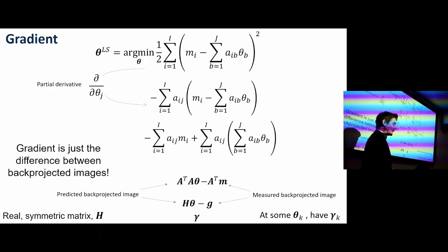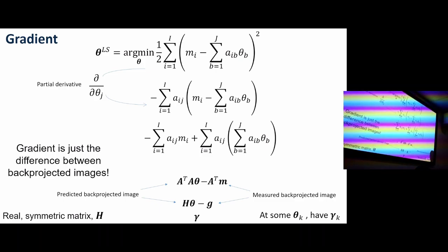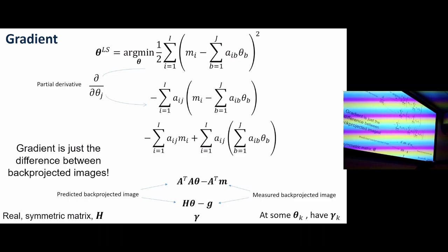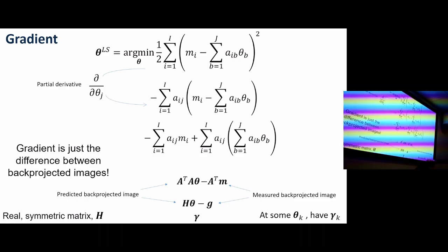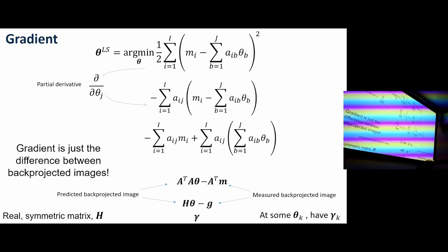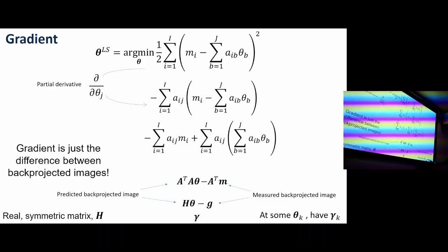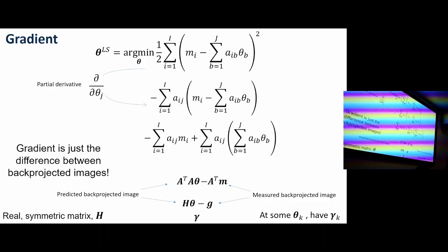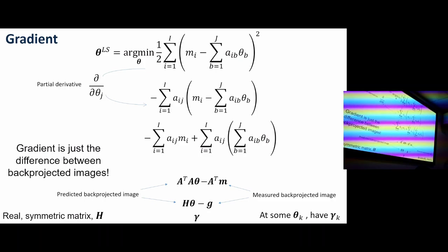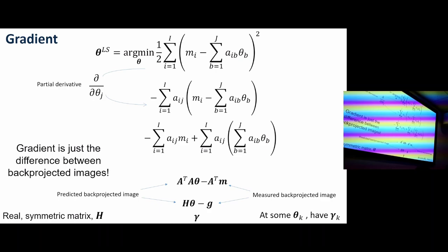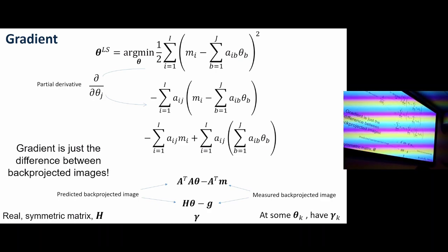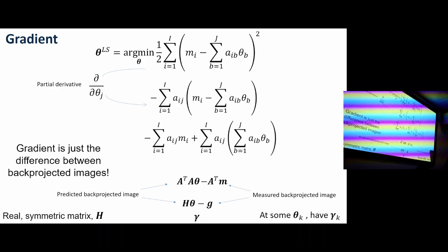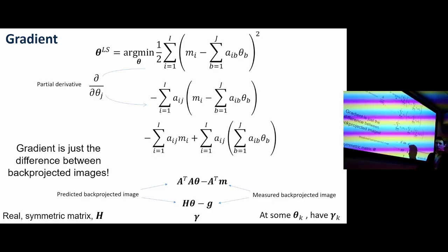So if I've got any candidate current estimate of my image, I'm going to use a subscript k for indicating which iterate I'm in — vector theta subscript k means the k-th iteration. For any given candidate vector theta at iterate k — it could be a uniform starting image — I can, without storing the system matrix, just analytically forward project and analytically back project to find the gradient of the least-squares cost function with computational ease.